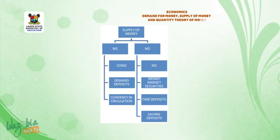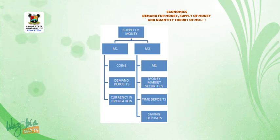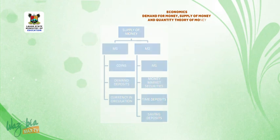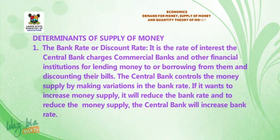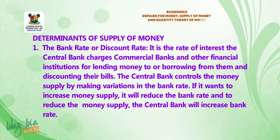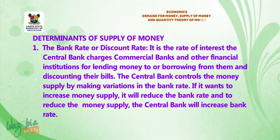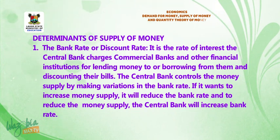I hope you've gotten that and drawn your own diagram at home. So let's look at the determinants of supply of money. One: the bank rate or discount rate.